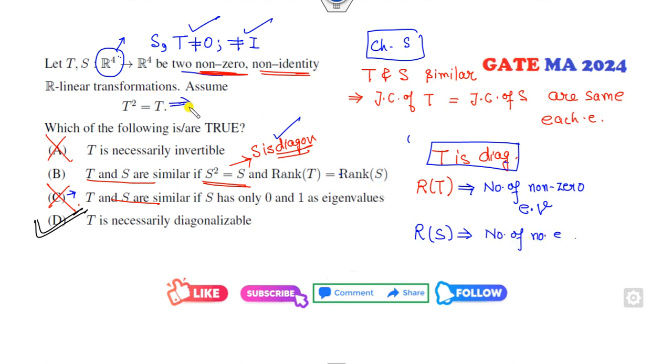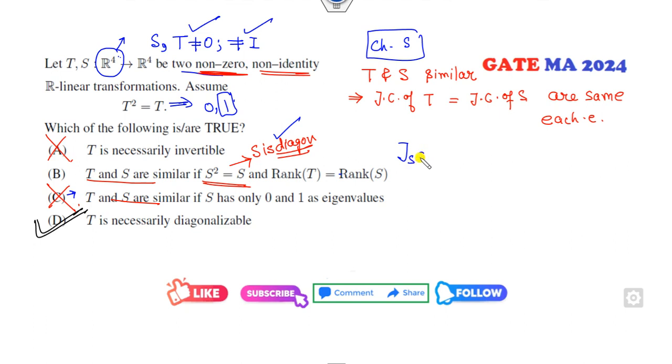T is diagonalizable, so rank of T is the number of non-zero eigenvalues. Rank of S, again S is diagonalizable, so it is the number of non-zero eigenvalues. The eigenvalues of T are 0 and 1, so 1 is the only non-zero eigenvalue. Same for here. Does it make them similar?